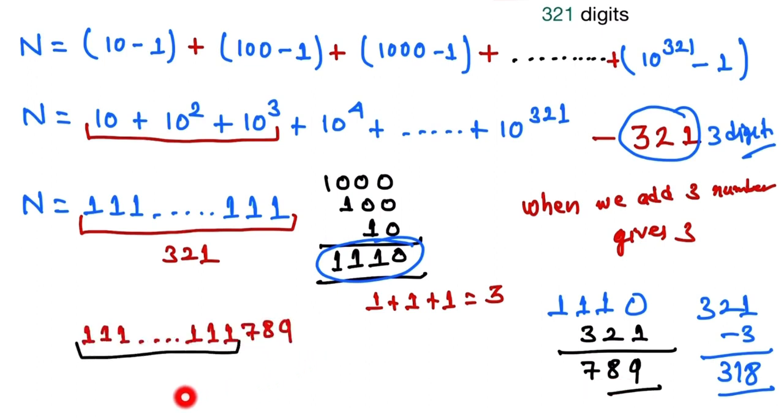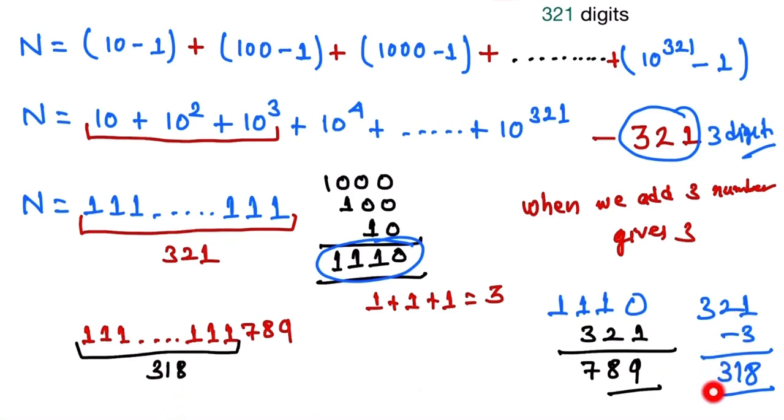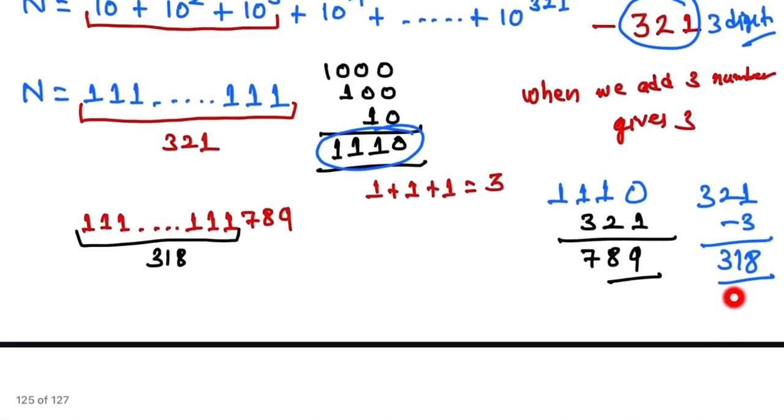And this digit is 318 because last 3 digits is another number, so we subtract 3 from 321. So the sum of this digit: total 1s is 318. So when we add 1 on 318 times, it gives 318 plus...